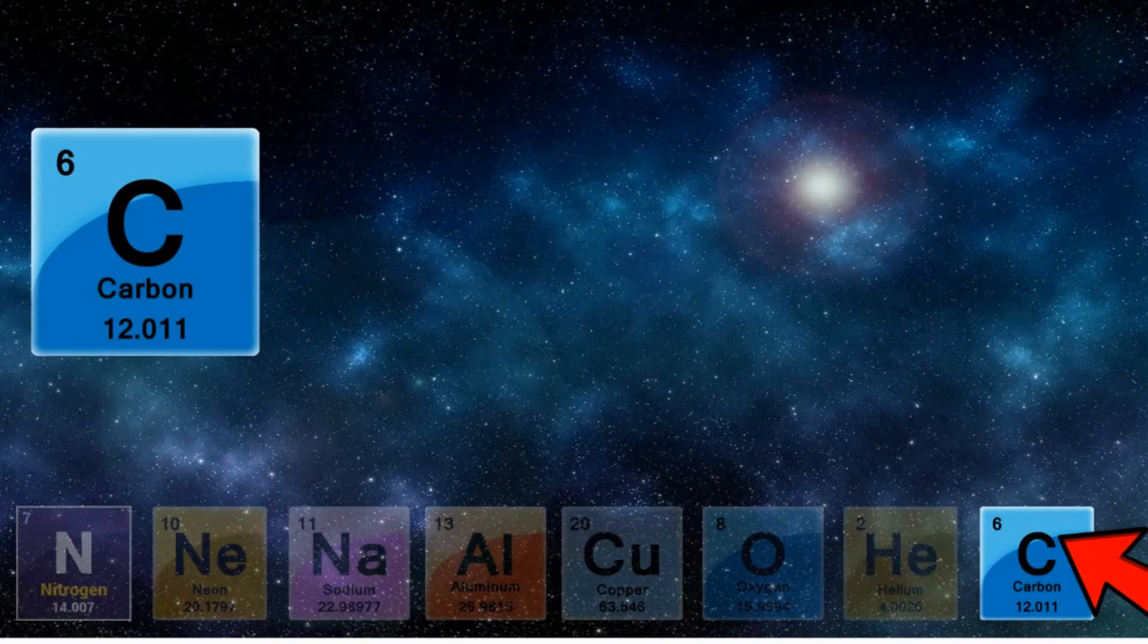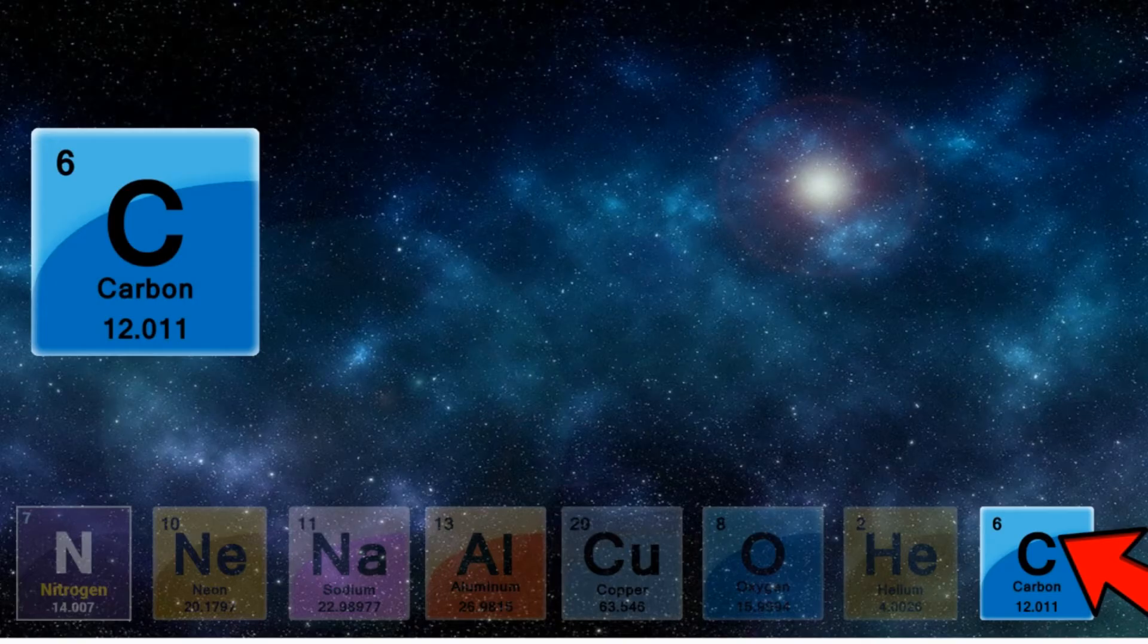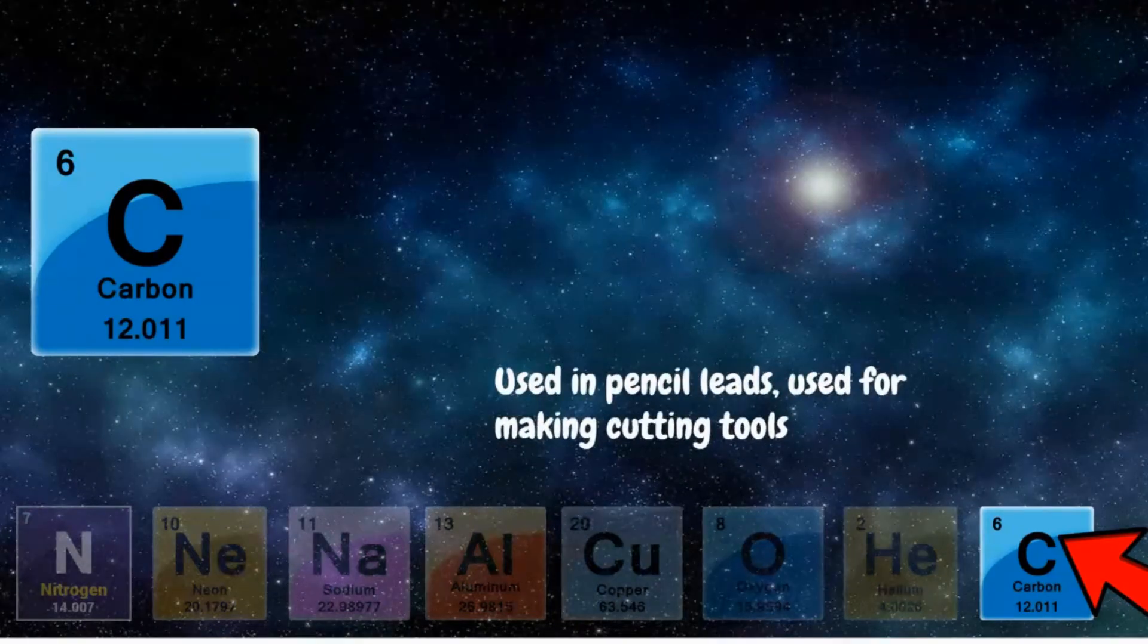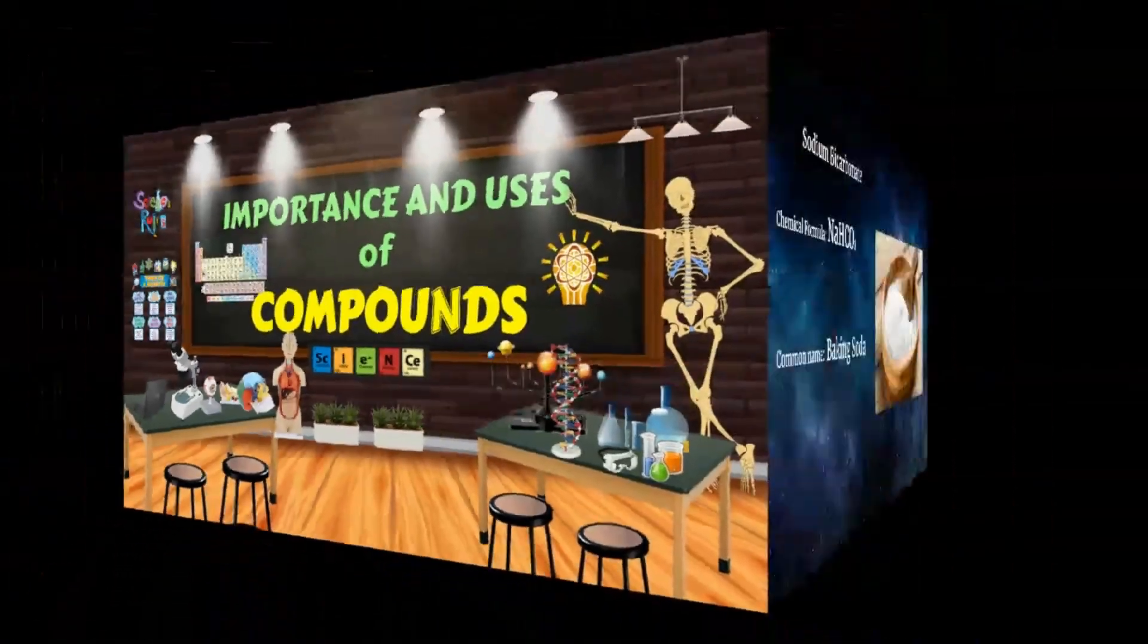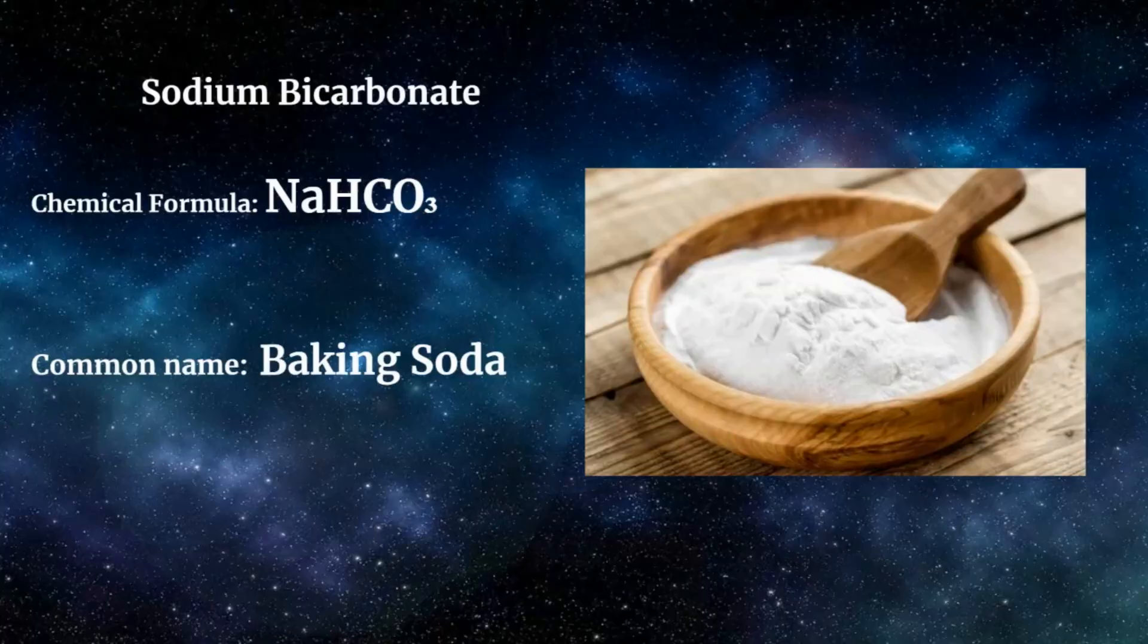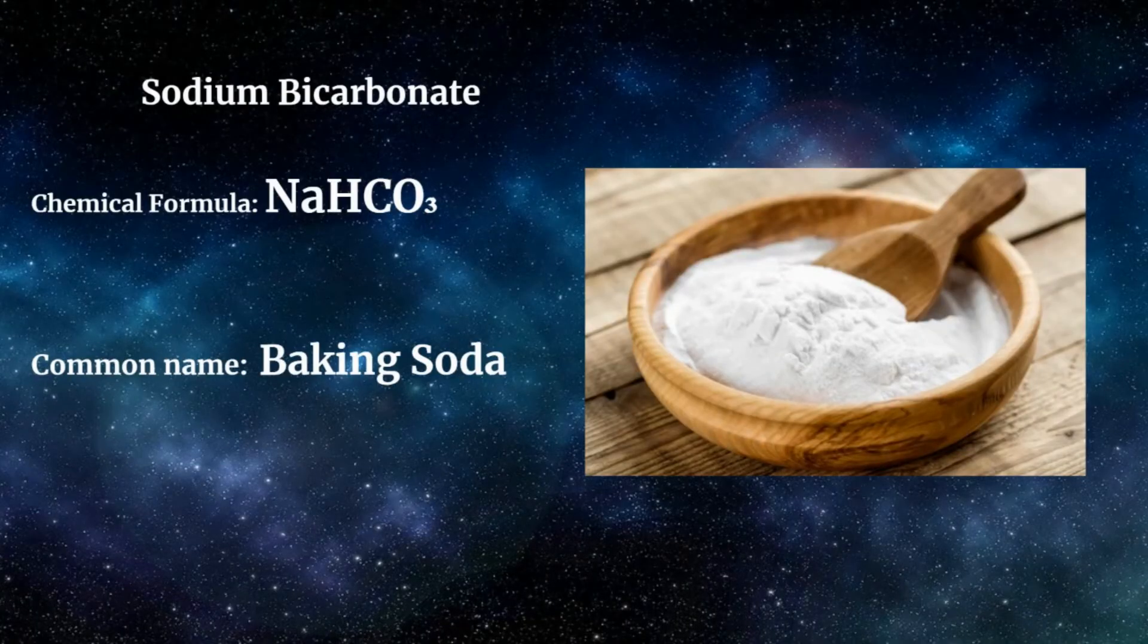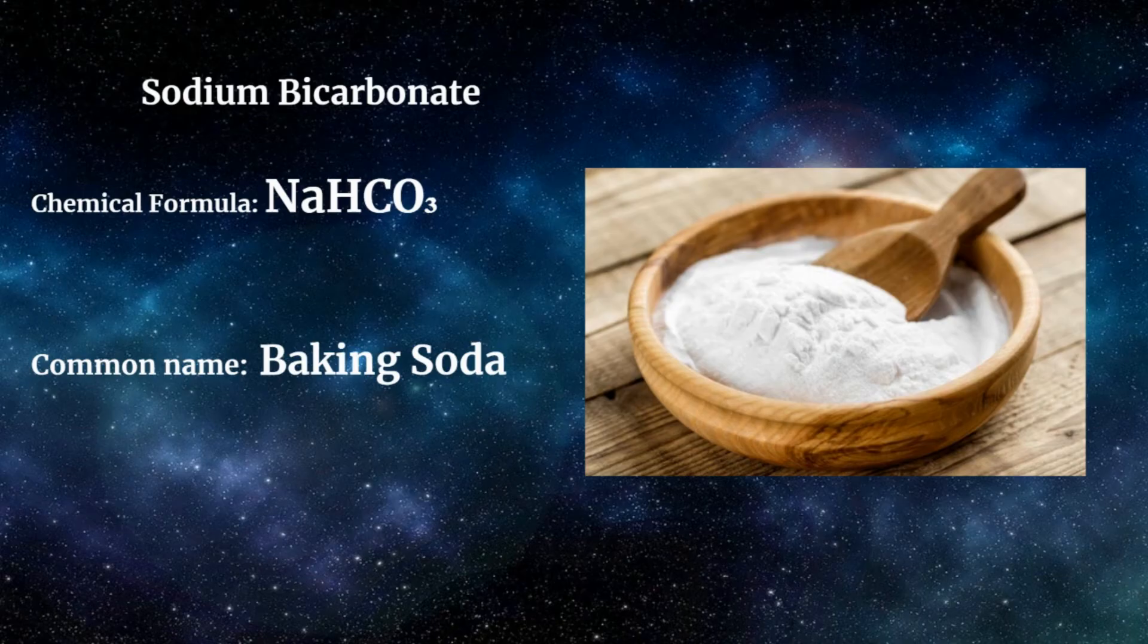Carbon with a chemical symbol of C. It is used as pencil leads and for making cutting tools. Let us now have the importance and uses of some common compounds. First, we have sodium bicarbonate or what we call baking soda. It is used for baking or making bread.